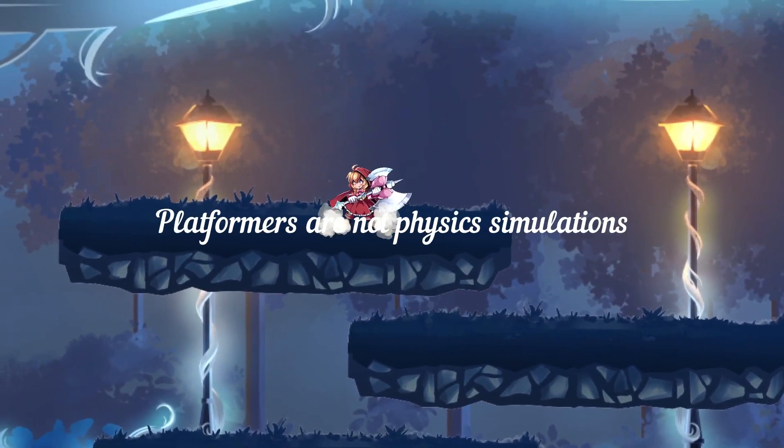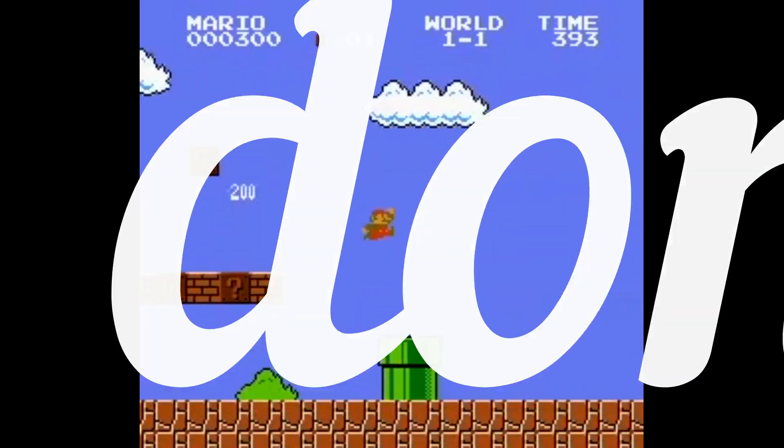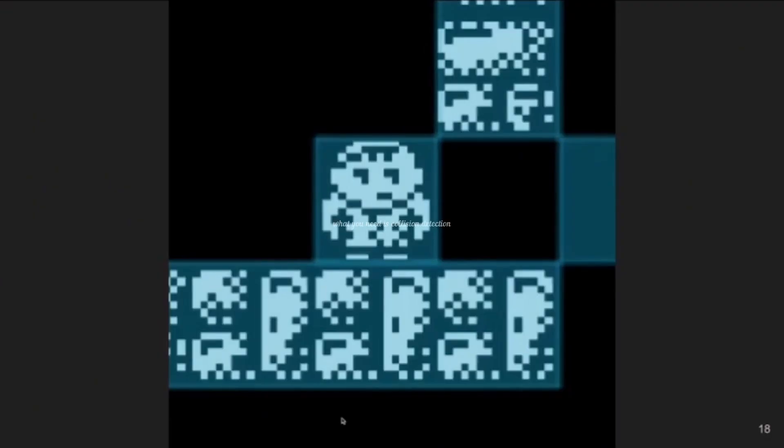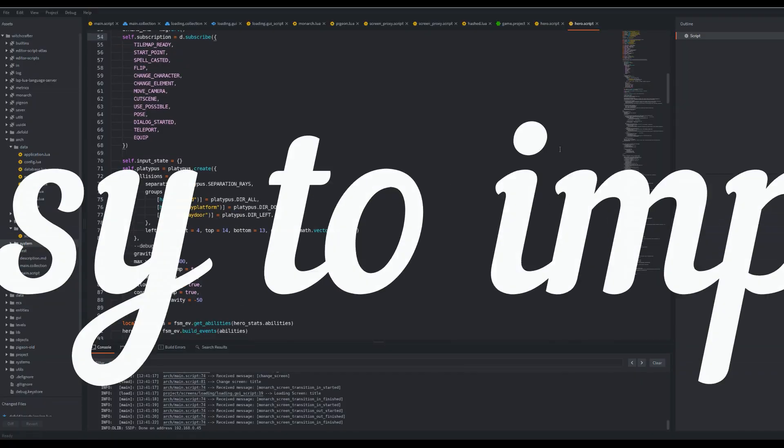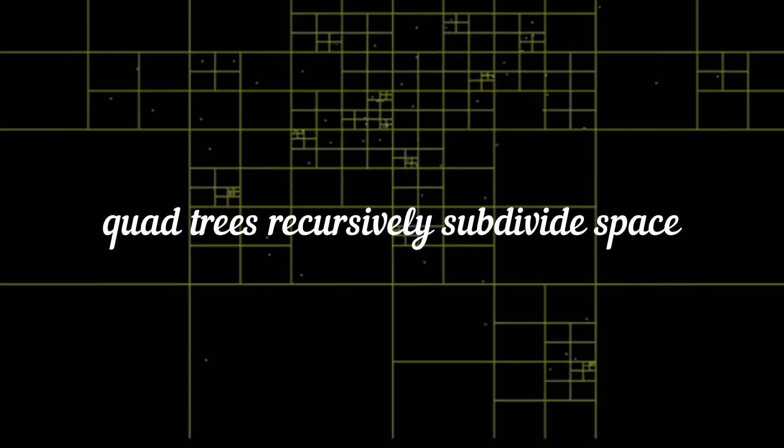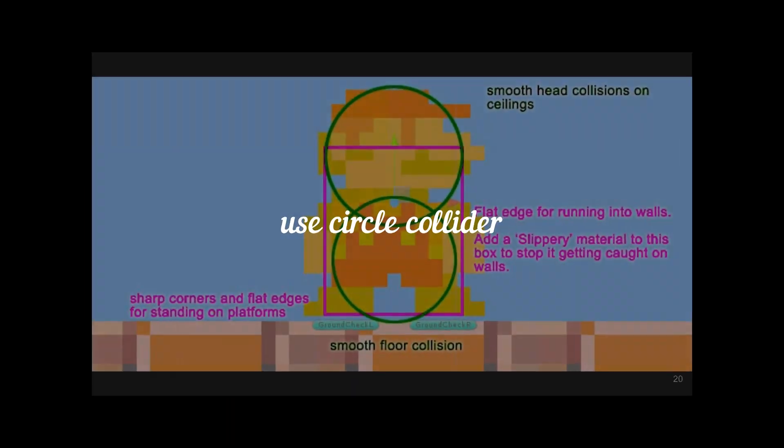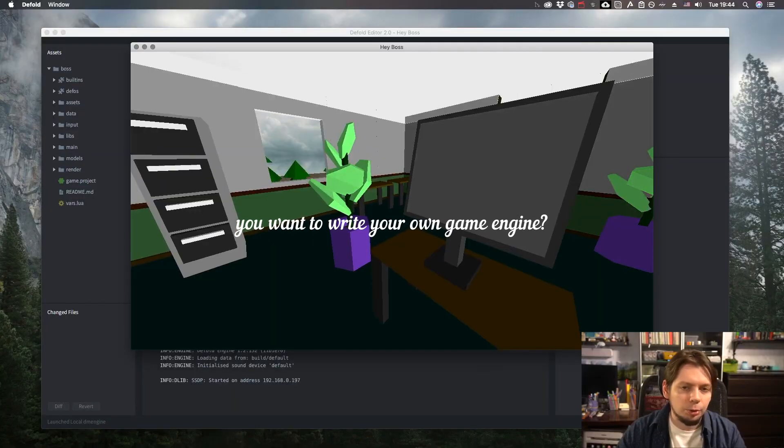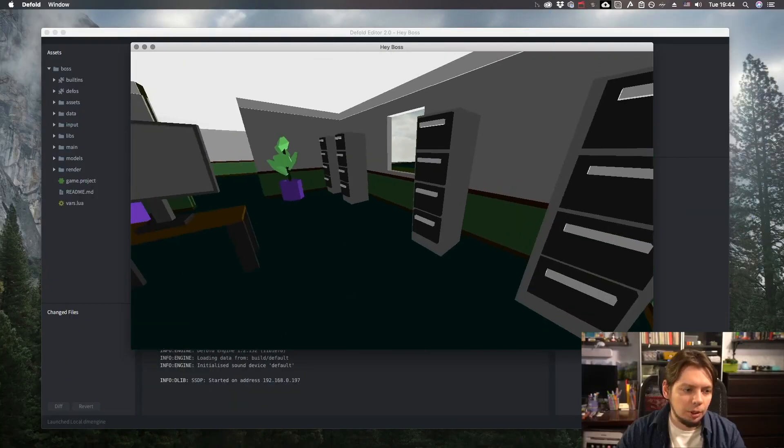Platformers are not physics simulations. Mario games don't use Box2D. You don't need all of that. What you do need is collision detection, very easy to implement. Quad trees recursively subdivide the space of your game into quadrants. You also want to write your own game engine? Go for it. Good luck. See you in about three or six months when you return to Defold and start to appreciate it more.